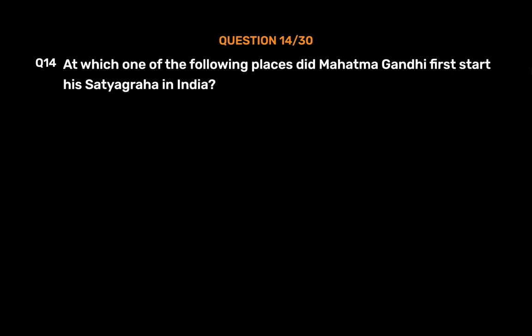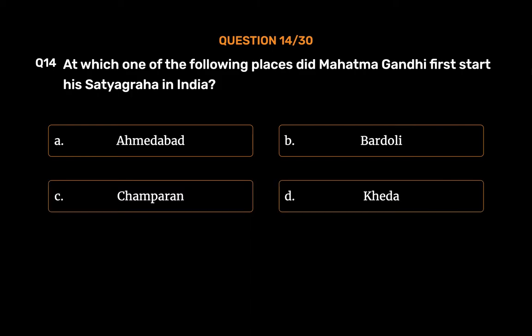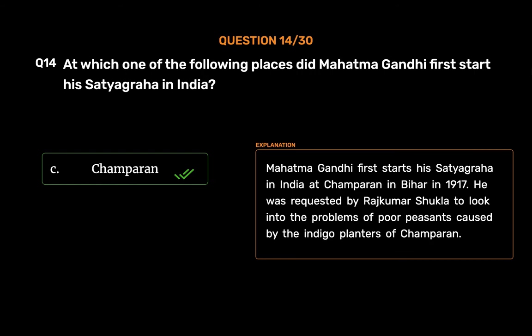Question No. 14. At which one of the following places did Mahatma Gandhi first start his Satyagraha in India? Option A, Ahmedabad; Option B, Bardoli; Option C, Champaran; Option D, Khera. The correct answer is Option C, Champaran. Mahatma Gandhi first started his Satyagraha in India at Champaran in Bihar in 1917. He was requested by Rajkumar Shukla to look into the problems of poor peasants caused by the indigo planters of Champaran.